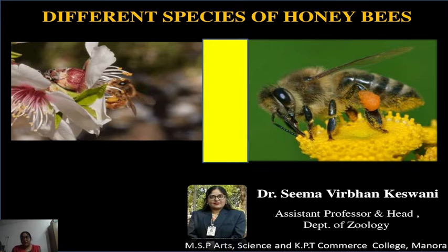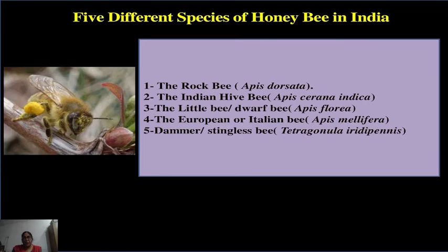Honey bees belong to the phylum Arthropoda, class Insecta, order Hymenoptera and family Apidae. There are five well-recognized types of bees found in the world: the rock bee, Indian hive bee, Indian little bee, European bee, and the dammer or stingless bee. Out of these five types, three are common in India: Apis dorsata, Apis florea and Apis indica.